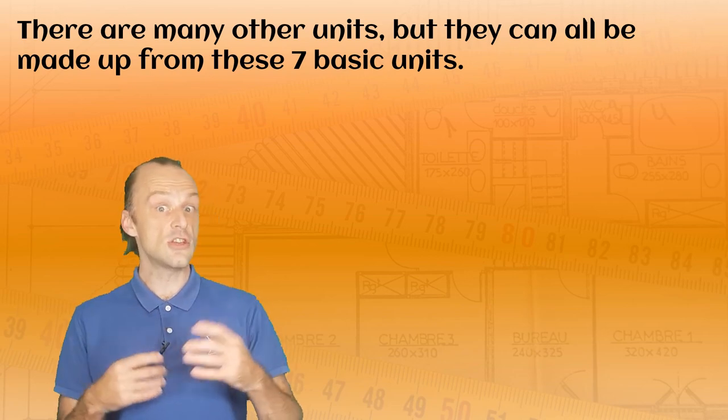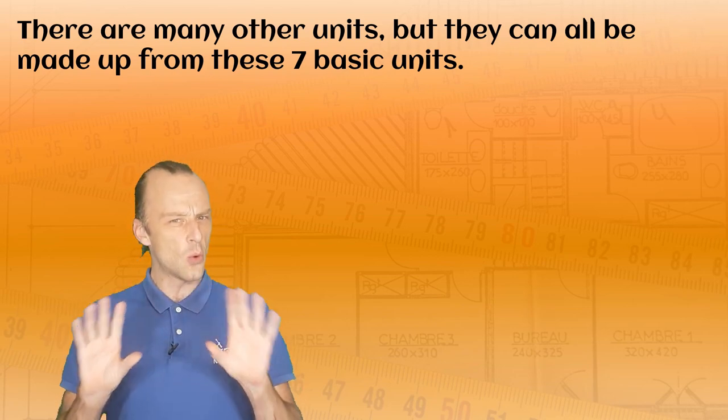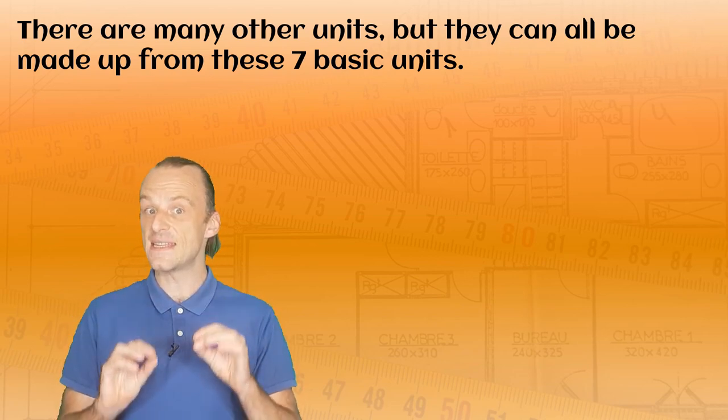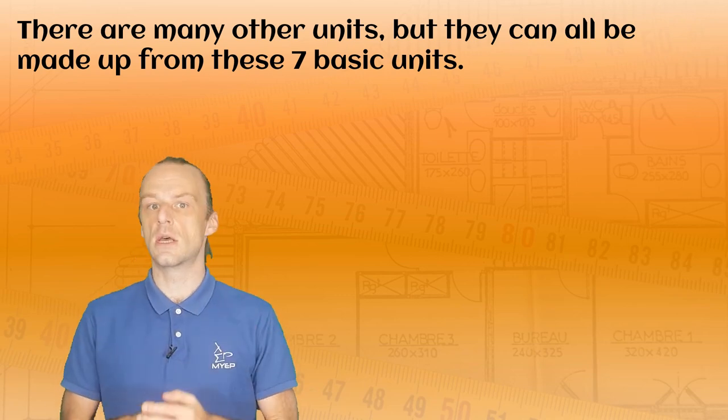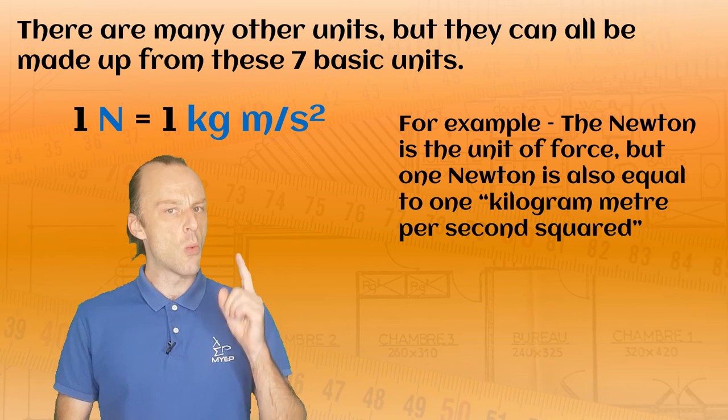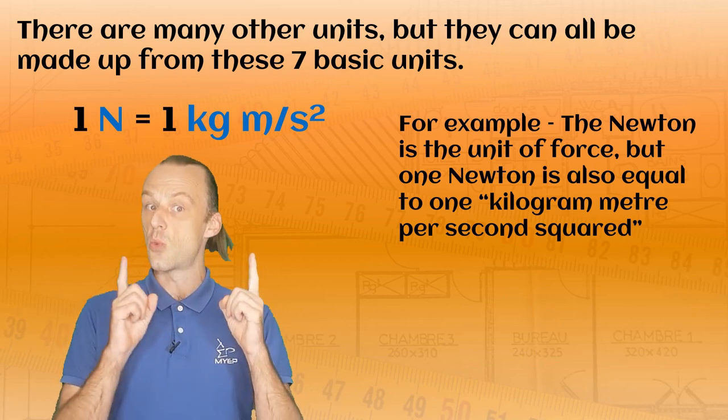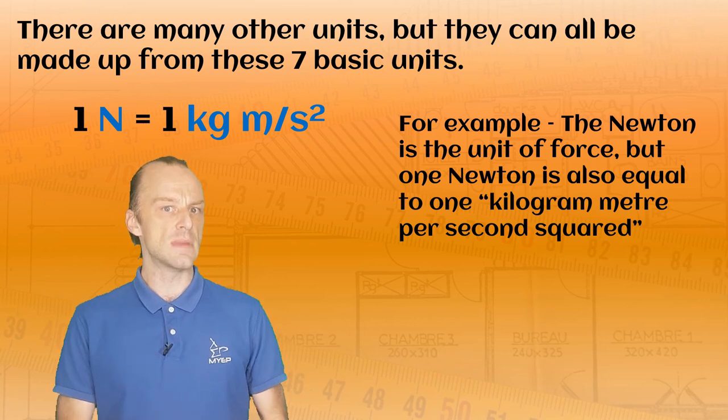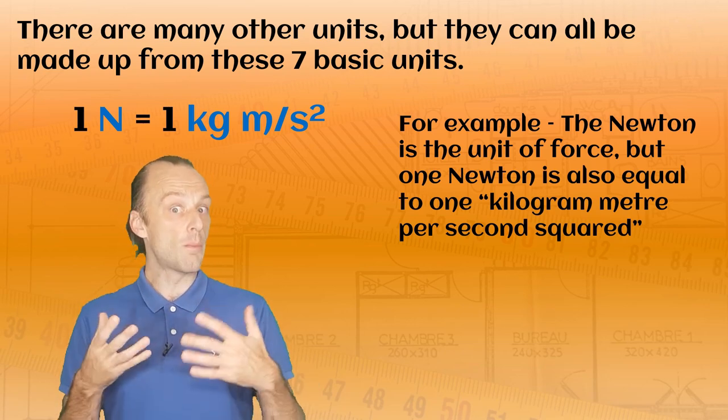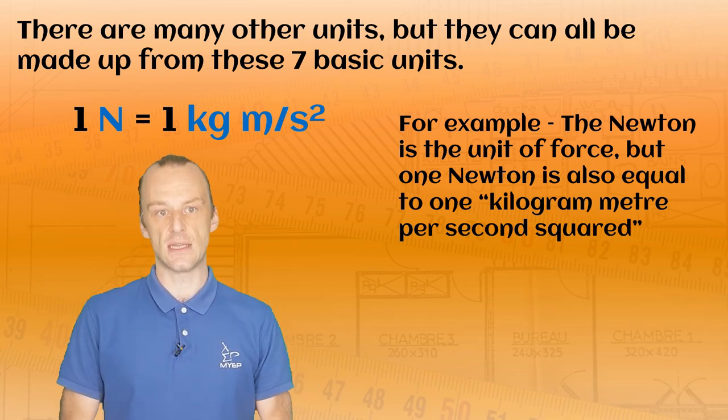You may have heard of other units that we use, but they can all be made up from these basic seven. For example, you might have heard of the Newton as a unit of force, but one Newton is equal to one kilogram meter per second squared, and kilograms, meters, and seconds are all basic SI units.